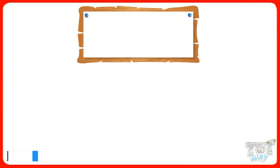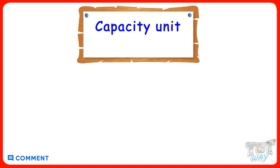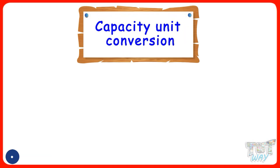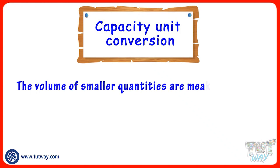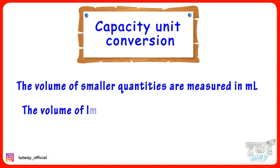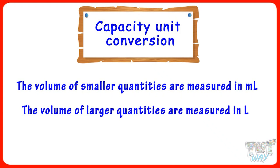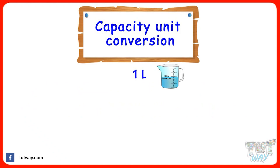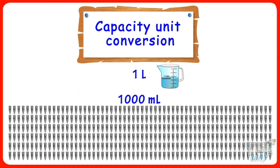The volume or quantity of a liquid is measured in liters and milliliters. Smaller quantities are measured in milliliters, and larger quantities are measured in liters. 1 liter equals 1000 milliliters.